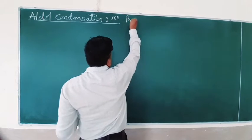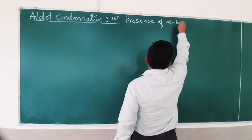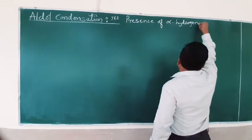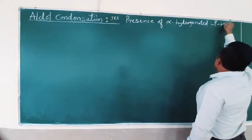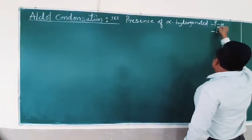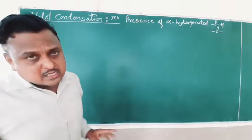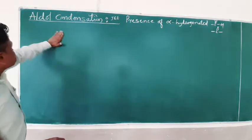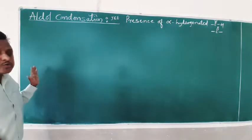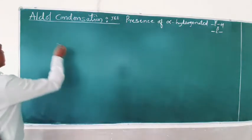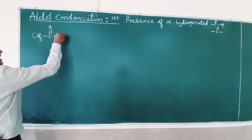Aldol condensation happens only in the presence of alpha-hydrogenated aldehydes or ketones. It means aldol condensation happens only in presence of alpha-hydrogenated compounds. This is a very important topic for JEE, NEET, and NCERT theory questions. Let us begin with an example from our syllabus: acetaldehyde (ethanal).